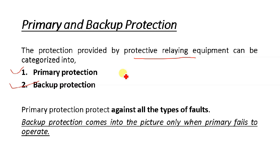Now let us discuss primary and backup protection. The protection provided by protective relaying equipment can be divided into two parts: primary protection and backup protection. Primary protection is the first line of defense. In all kinds of faults — whether three-phase fault, single line-to-ground fault, or any kind of fault in a power system — the primary protection acts first, whether the fault is at a bus bar, generator terminal, or in a transformer.